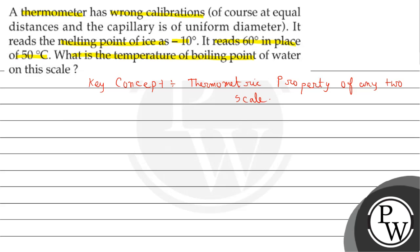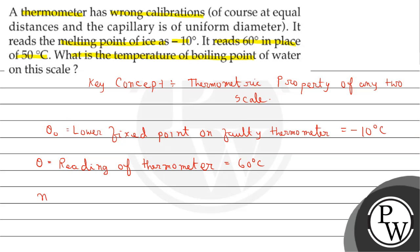Now here we can take θ₀ as the lower fixed point on faulty thermometer, which value is given in the question. It is minus 10 degrees Celsius. θ is the reading of thermometer, and it is given in the question as 60 degrees Celsius. And small n is the number of divisions between upper and lower point.